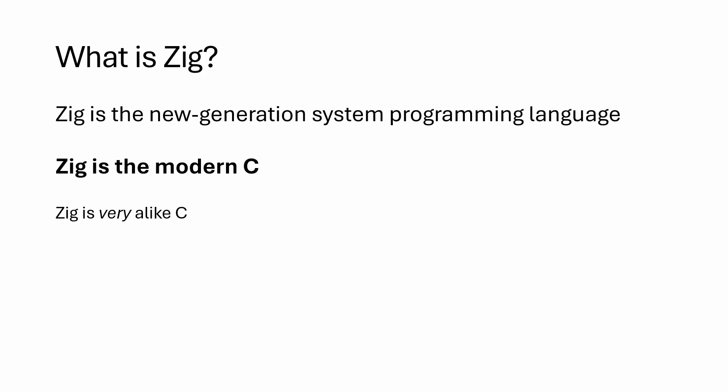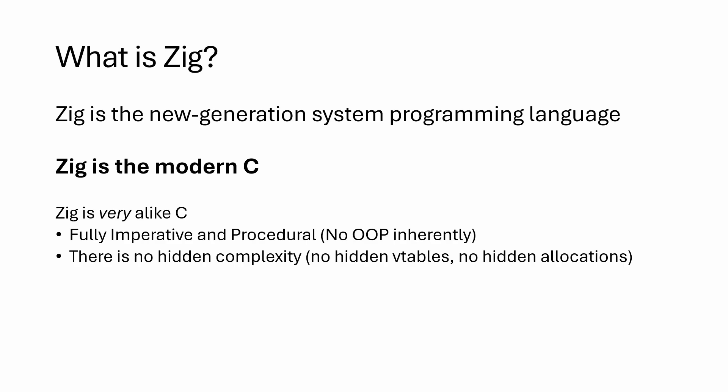Zig is very alike C — first and foremost it is fully imperative and procedural, and inherently there is no object-oriented programming, for a good reason. That's because there is no hidden complexity in Zig like hidden v-tables or hidden allocations. Hidden v-tables are used for stuff like method overloading in object-oriented languages, which you'll commonly find in interfaces and abstract classes.